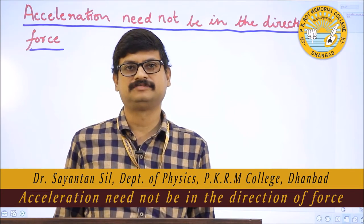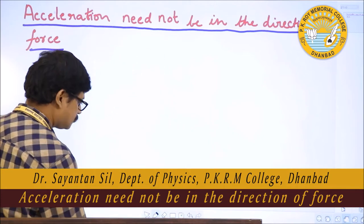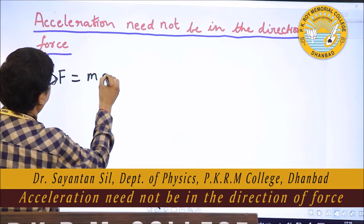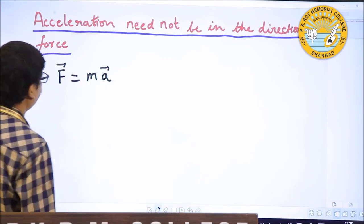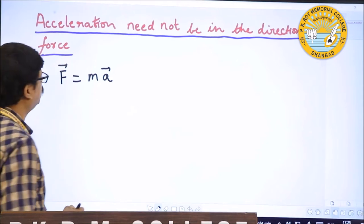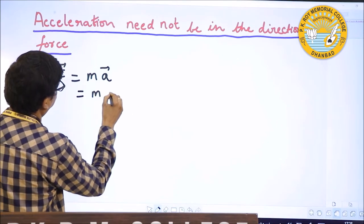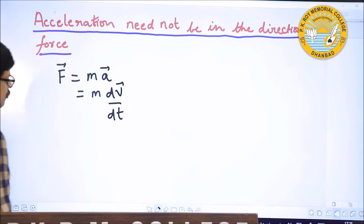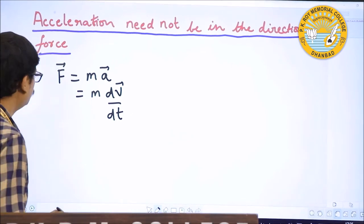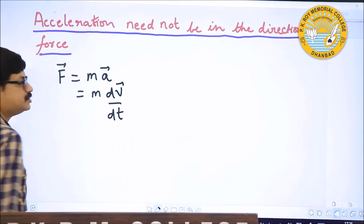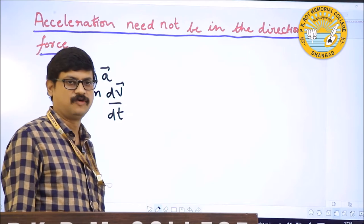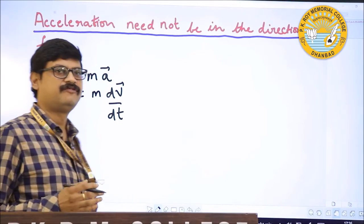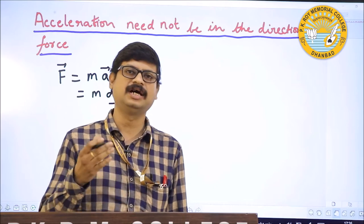From Newtonian mechanics, a very famous equation of Newton, we know that F is equal to ma. This is a very famous equation and a is actually the rate of change of velocity, so it is m dv/dt. From this equation from our school days, we know that this rate of change of velocity is actually in the direction of force. Also, we have learned that if there is a force in the x-axis, it does not have any effect in the y-axis.